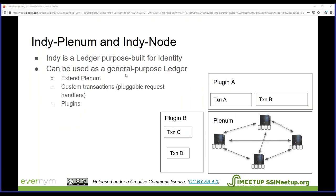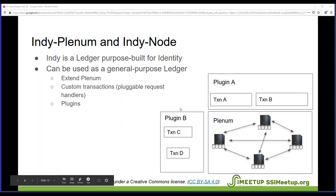Indy Plenum can be used as a general-purpose ledger because of its modular architecture, where any supported transaction can be registered separately with pluggable request handlers. It's quite easy to add new transactions and new read requests on top of Plenum, and plugins are supported with custom business logic for processing those new transactions.